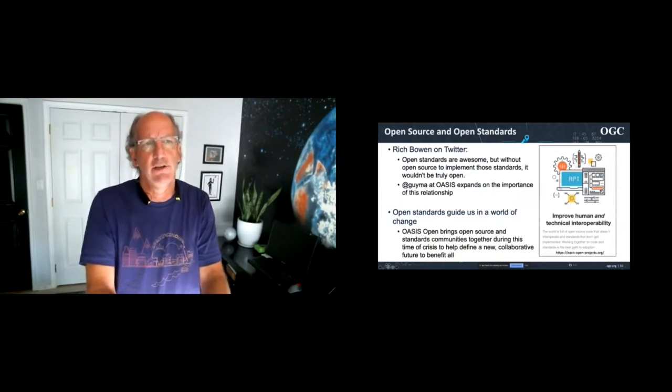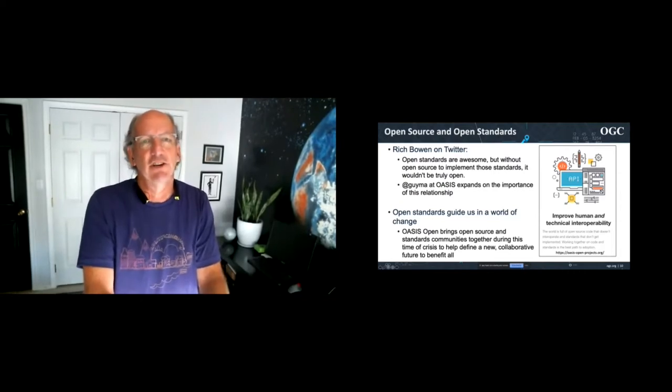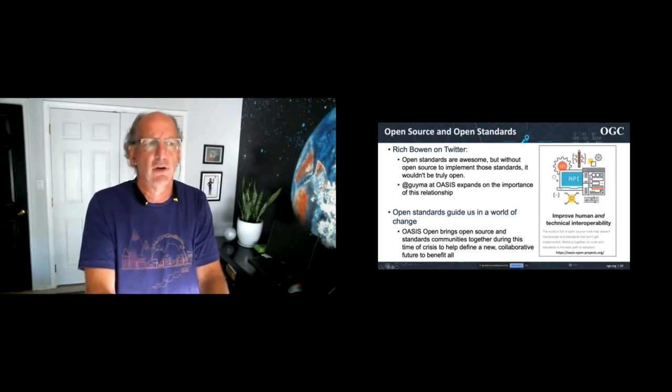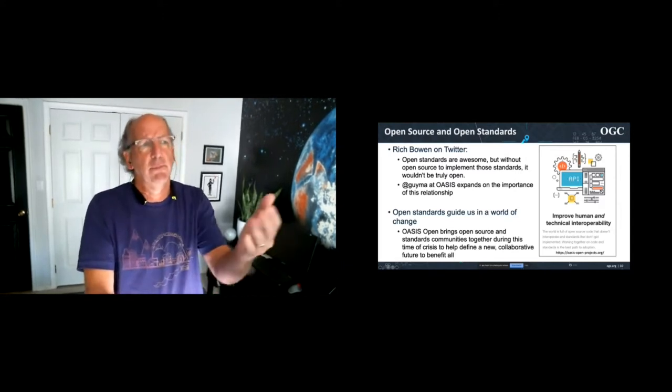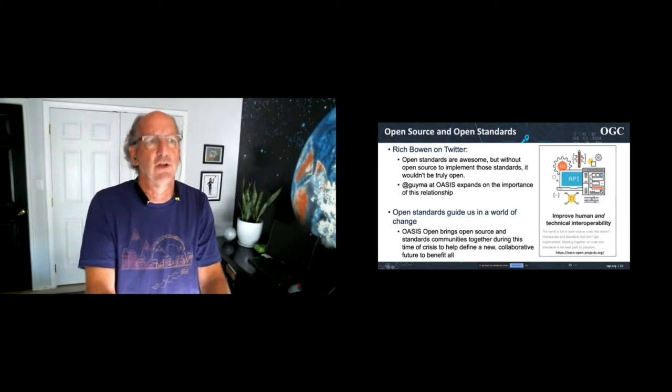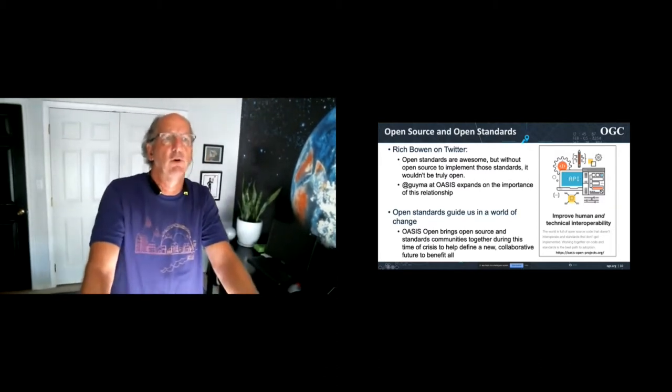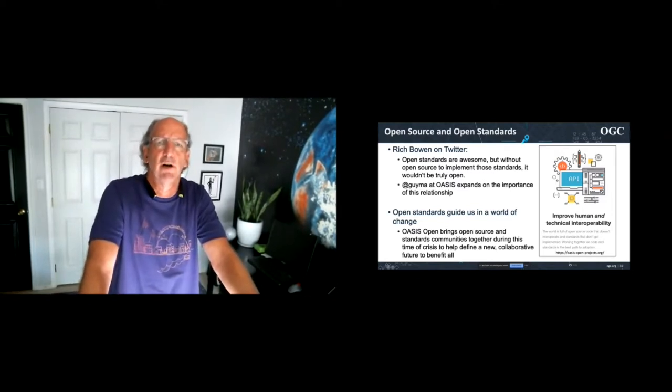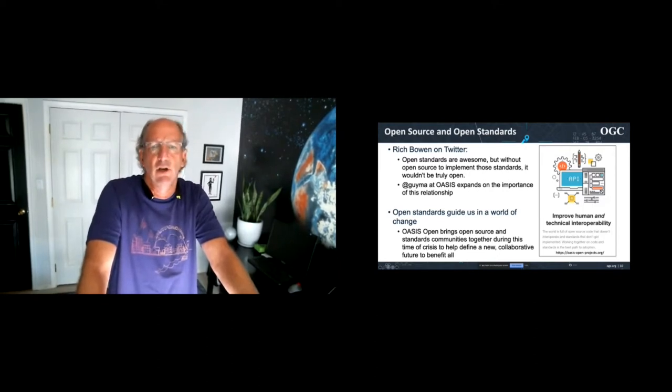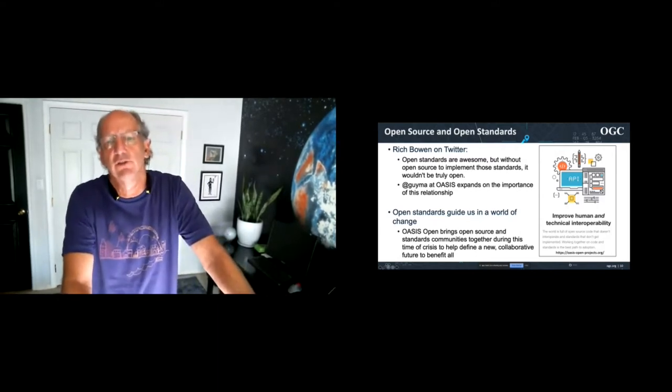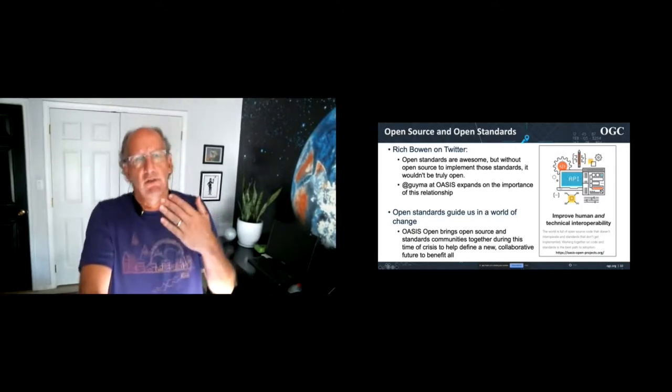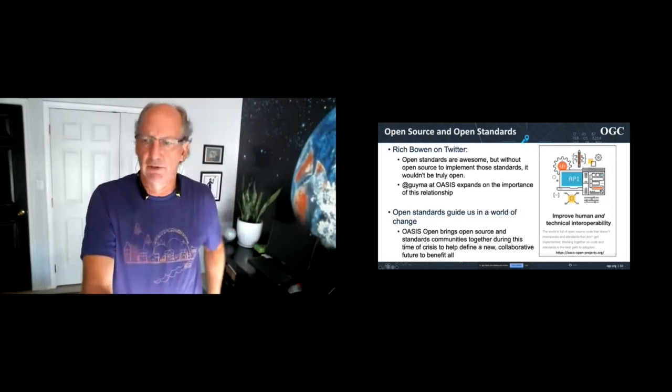You know, I'd like to draw on an esteemed colleague today, Rich Bowen, you know, what a hero, man, putting this together in terms of COVID and virtual, but he's also a leader with respect to open standards and open source. He serves on the board of Oasis as well as, of course, here in Apache. And, you know, I pick up a Twitter tweet that he said the other day, open standards are awesome, but without open source to implement those standards, it wouldn't be truly open. Completely agree with that. We need a mix of open standards and open source in order for that ecosystem of knowledge and implementation to move forward. The Oasis open project has a really good statement with respect to that, that the world is full of open source code that doesn't interoperate in standards that don't get implemented. Working together on code and standards is the best path to an option.